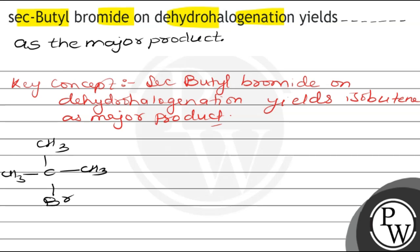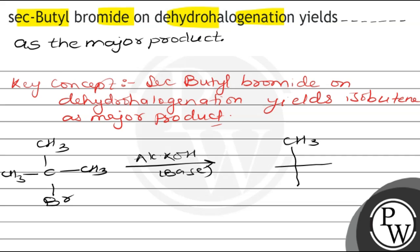The reaction proceeds as follows: sec-butyl bromide on reaction with alcoholic KOH, which acts as a base, forms CH3-CH(CH3)-Br. The KOH then attacks the acidic hydrogen and removes it.